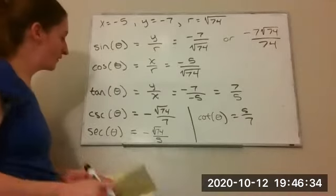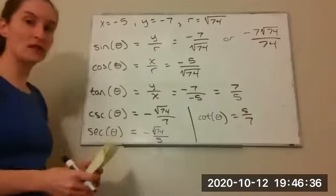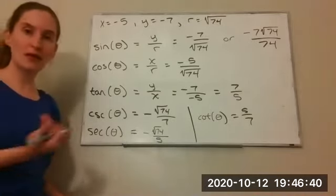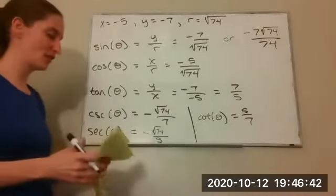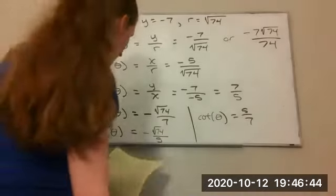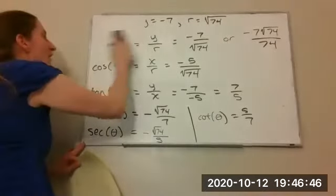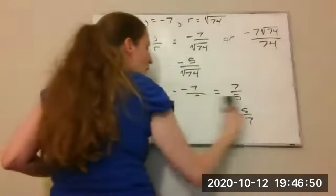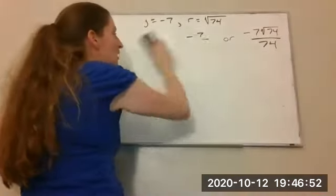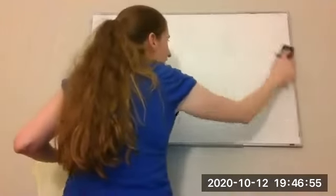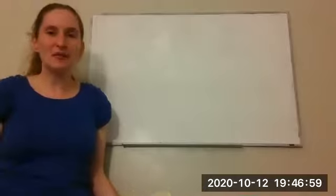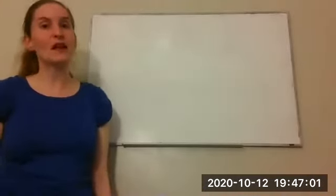So we just found all the trig functions of an angle that was not an acute angle — we couldn't do it using the right triangle, but we could using the extended definition. Note that when x or y equals zero, you may end up dividing by zero in some of these functions, which just means the function is not defined at those particular points.